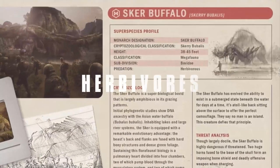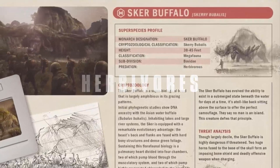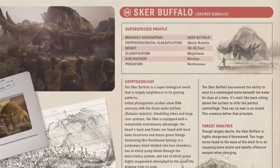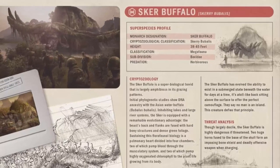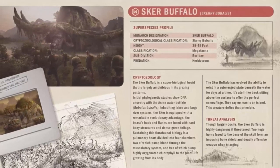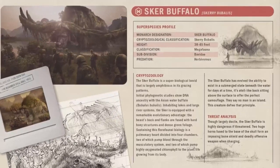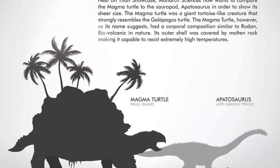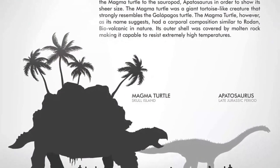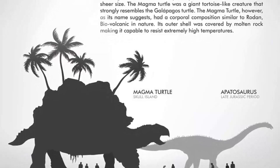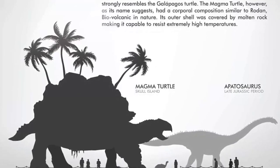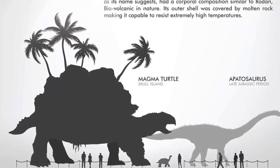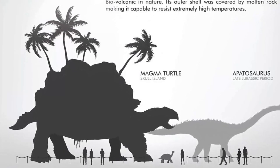Now we come to the animals of Skull Island. The first herbivores seen in the movie are deer, which run away from seismic charges dropped from helicopters. Then there are the giant Skurr buffalos, found in marshes — giant cousins of water buffalos that can reach heights of up to 45 feet. Next are the magma turtles seen in the comics, which are also docile creatures as big as the Skurr buffalos. There are also reports of water buffalos and other small herbivorous creatures.